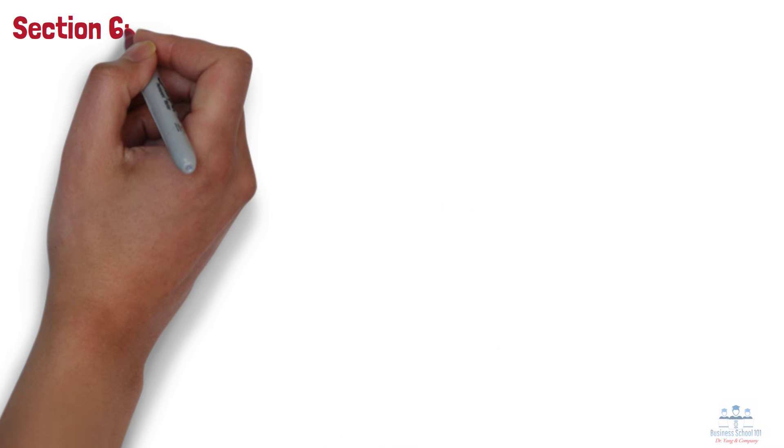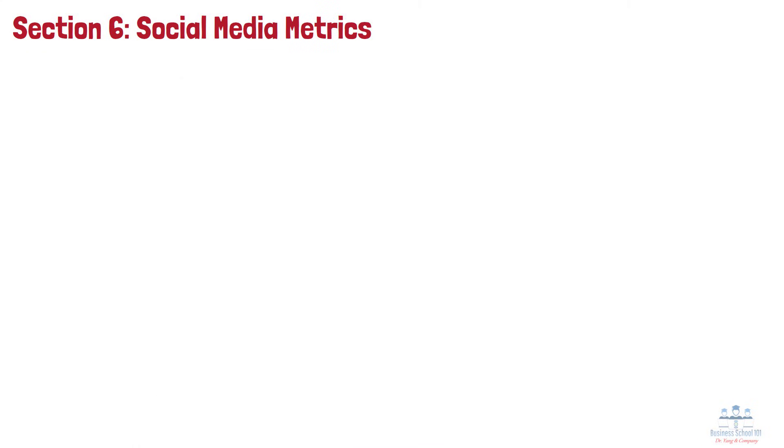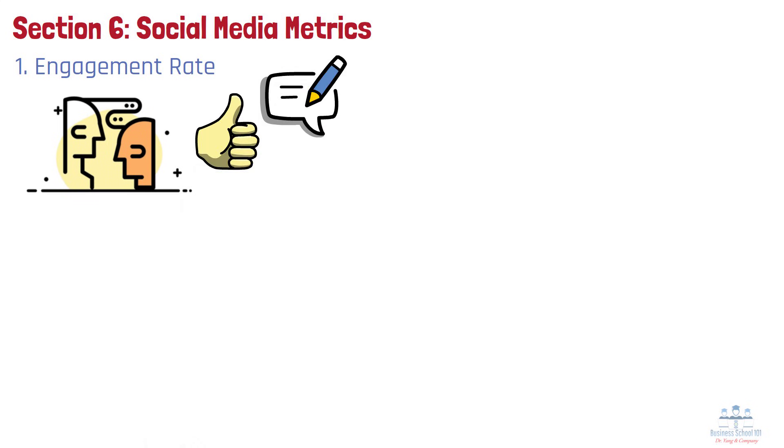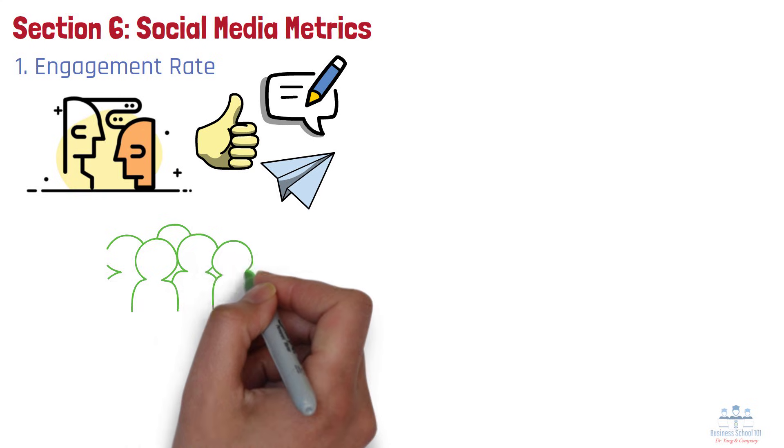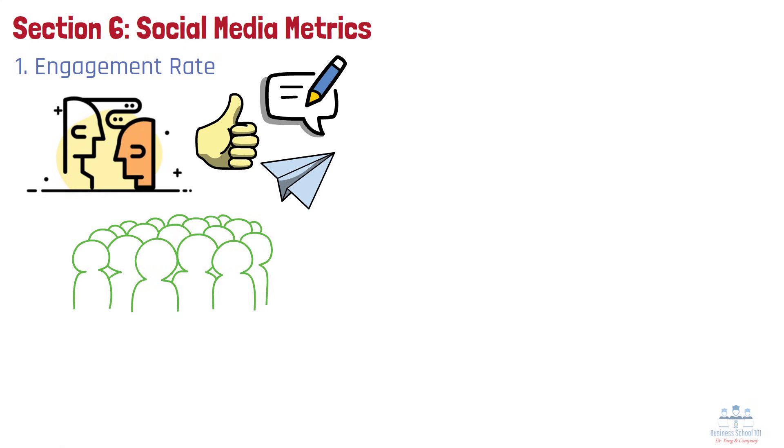Section 6. Social Media Metrics. Number 1. Engagement Rate. Engagement rate is a measure of how people interact with your content, likes, comments, shares, relative to your total audience size. It gives insight into how well your content resonates. A high engagement rate means your message is hitting home, while a low rate may require creative adjustments.